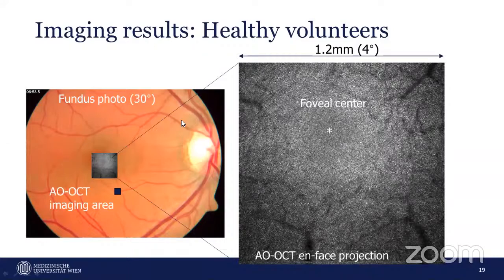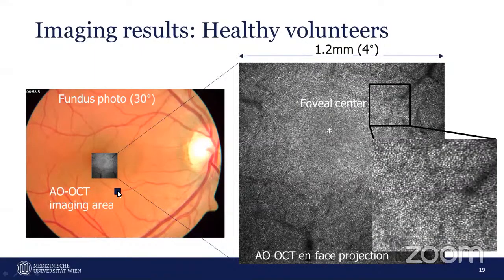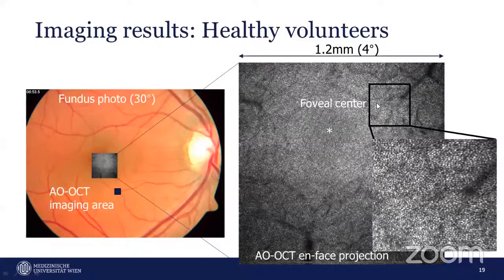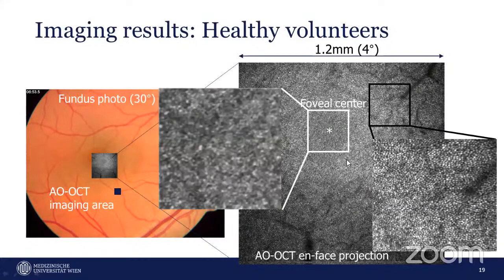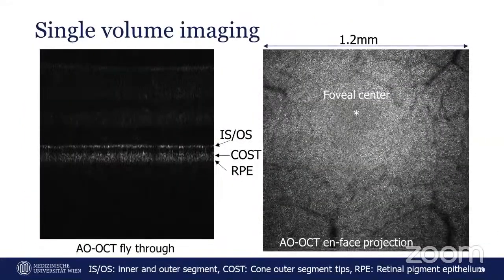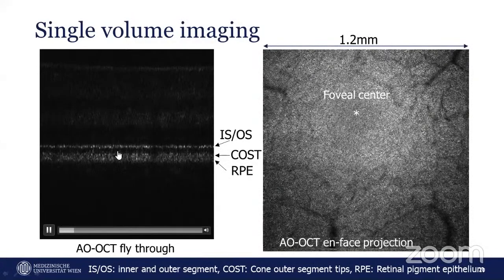Results from healthy volunteers: the asterisk marks the foveal center. With the four by four degree field of view, photoreceptors at the periphery of the retina are nicely resolved individually around one degree eccentricity from the fovea, while at the fovea itself the photoreceptors are partially resolved.